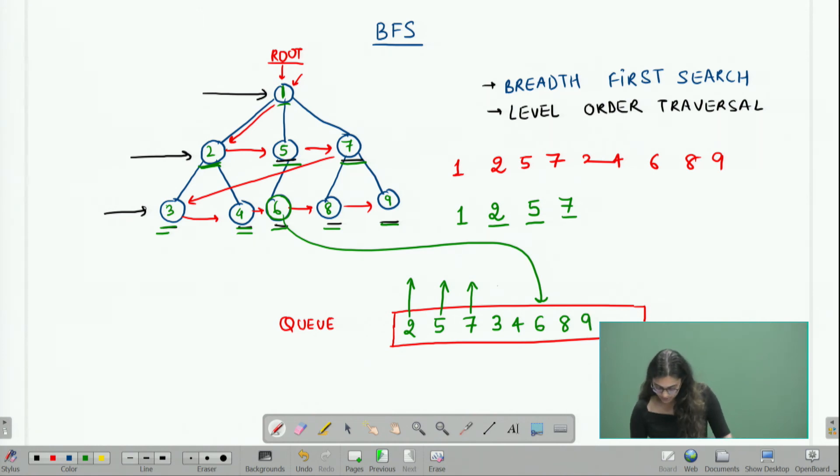Now my queue has a front which has value 3. So at this point, we should notice that we have completed traversing level 1 which had 1 node and we have completed traversing level 2 which had 3 nodes: 2, 5, and 7. Now I am moving on to all the children of the nodes which were there at level 2.